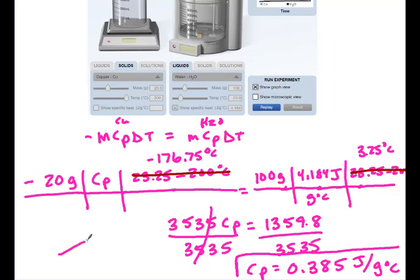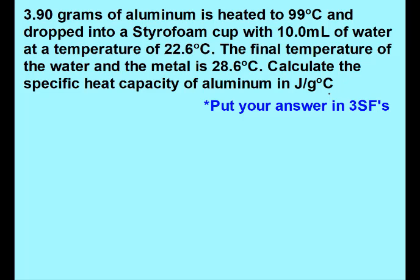If you look that up on a reference table, you'll see that copper does have a specific heat of 0.385. This next problem is very similar — it's just in words. We're going to use the calorimetry equation because we have aluminum and water — two different substances. Heat lost equals heat gained. If it was only talking about aluminum or only about water, we'd use the simple specific heat equation. That's how you tell the difference.